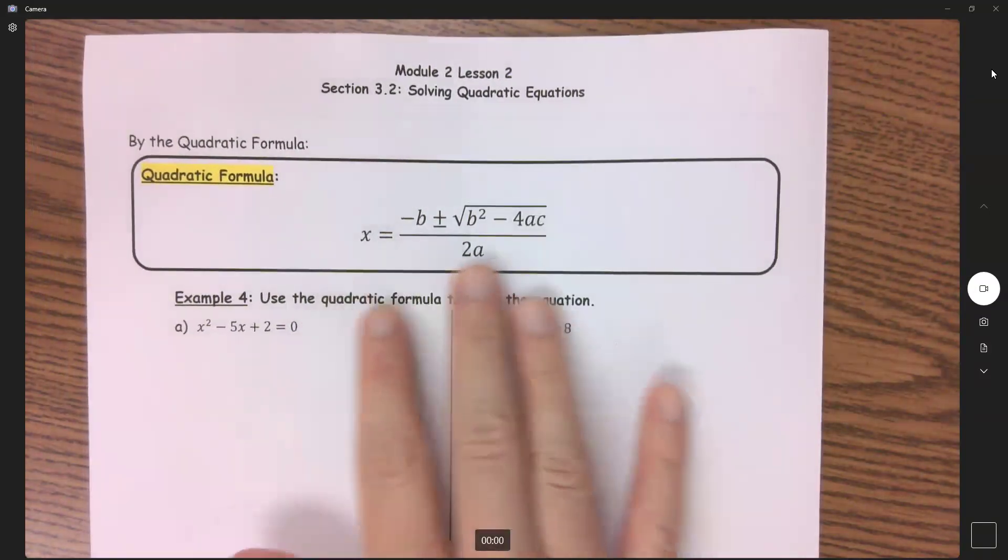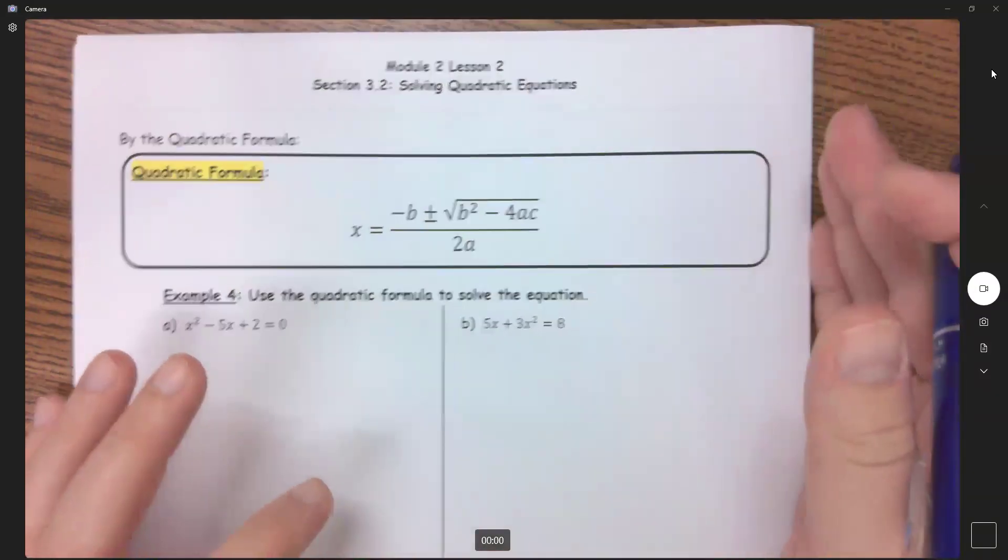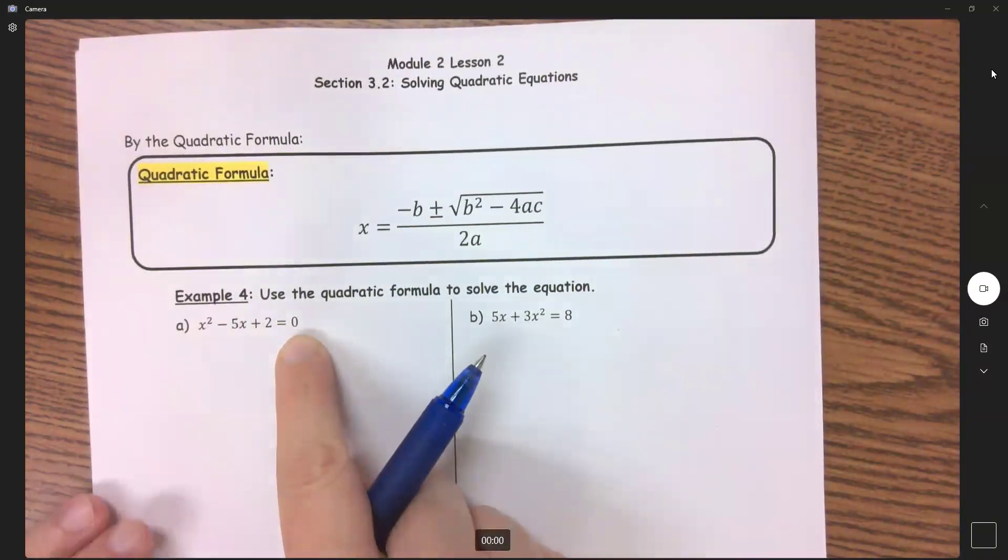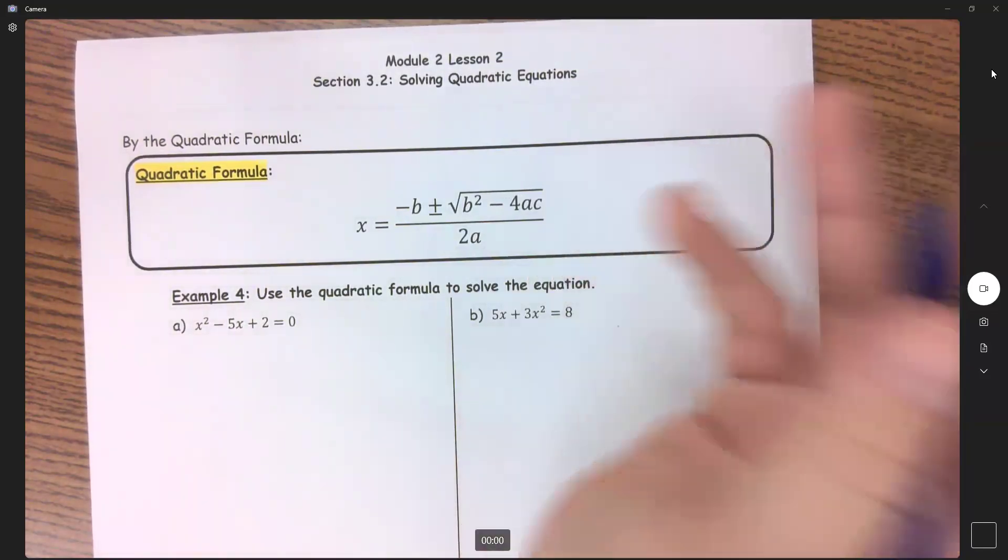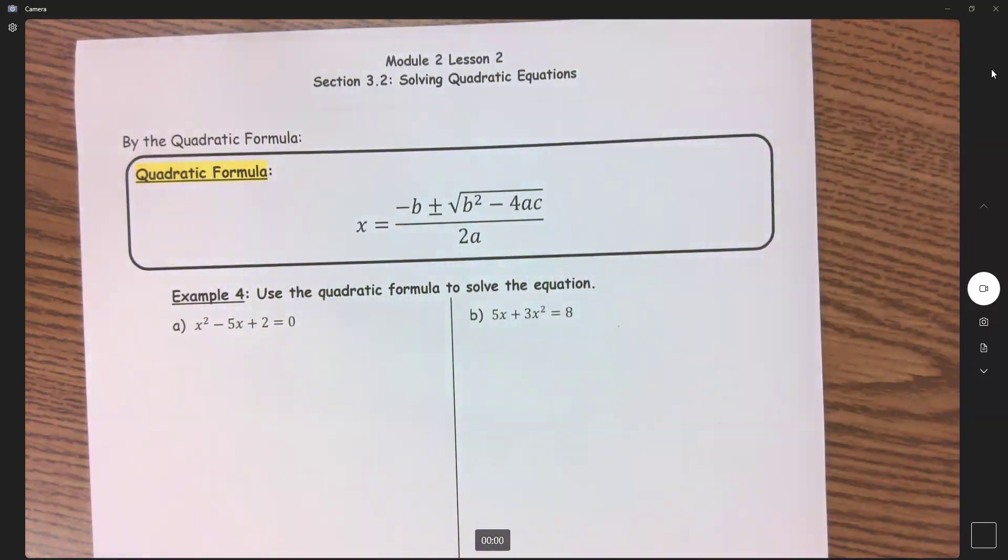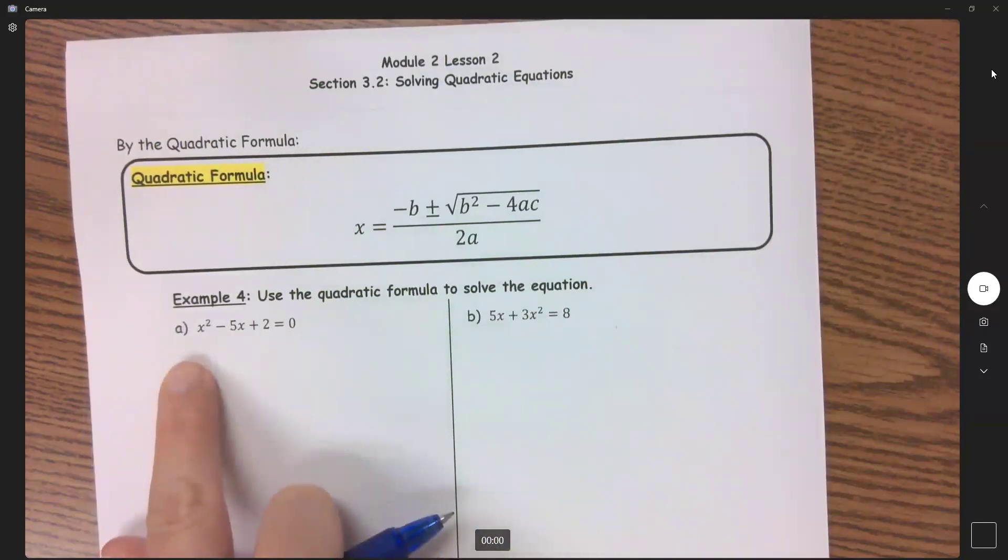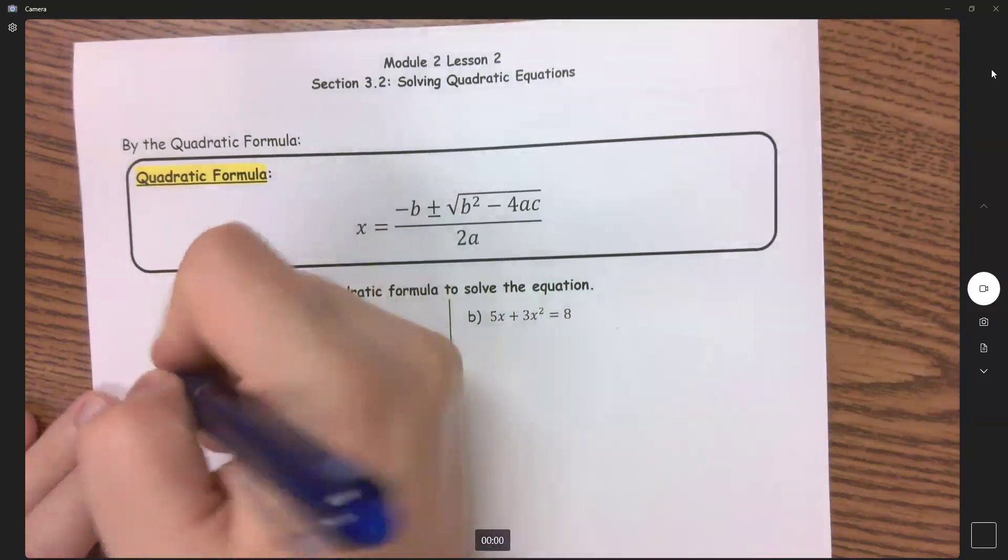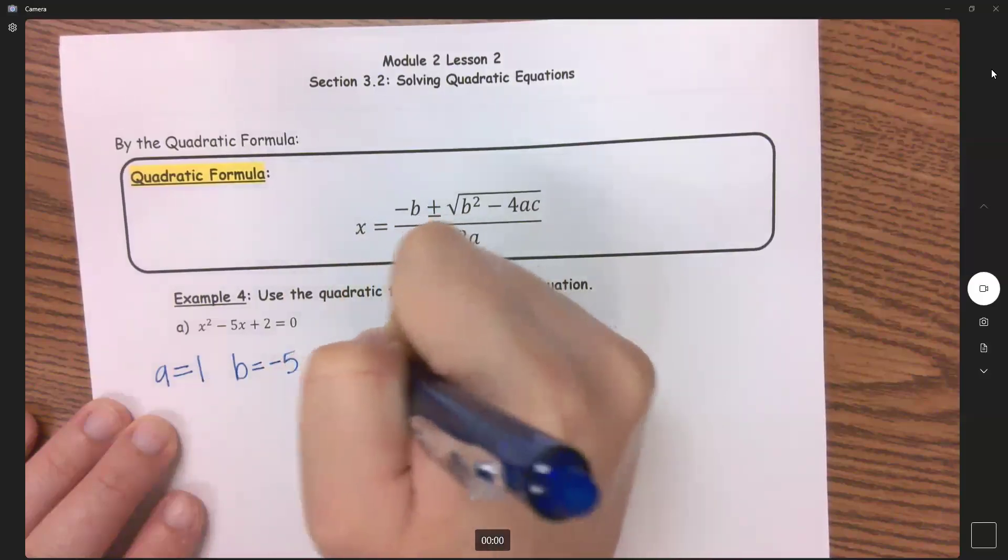Now, the big thing with this one is you have to plug it in, right? You have to simplify it, and you've got to make sure it's in the correct form. So when we are using this, we still want to make sure it's in standard form. So you still want to make sure, first and foremost, that it equals zero. So this one here is in the right form. So here, I'm going to list out my A, B, and C. And so we already talked about that your A is with your x squared, your B is with your x, and your C is your constant. So here, if this is my quadratic, my A equals 1, my B equals negative 5, and my C equals 2.